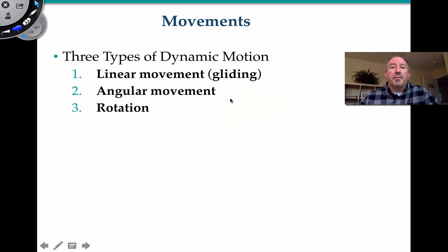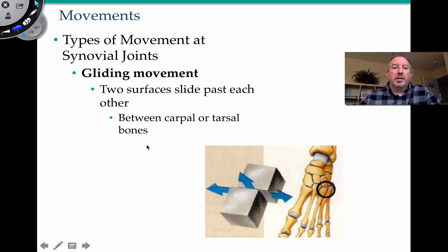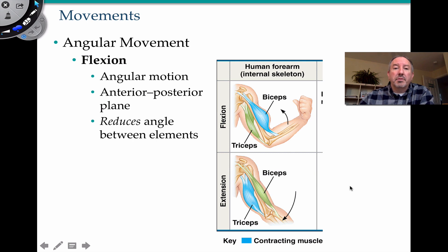Let's talk a little bit about movement now. We're going to talk about linear movement, angular movement, and rotational movement. Gliding is when two surfaces glide past each other — an example would be in the carpal bones of your wrist, which can slide past each other in a gliding-like motion, and also between tarsals, the little bones in your foot.